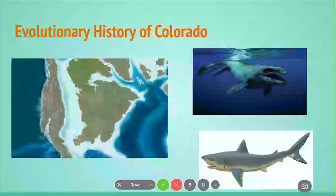One of the coolest features of Colorado's geographical and geological history is that it was actually covered in water for a very long time. As you can see, there was a seaway that covered Colorado from roughly 150 to about 60 million years ago. In this seaway you had some really cool species like the Plesiosaur, shown in the top right, and on the bottom a Squalicorax, which was a really cool ancient shark and an ancestor of modern sharks.